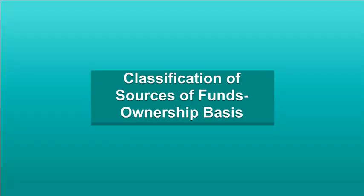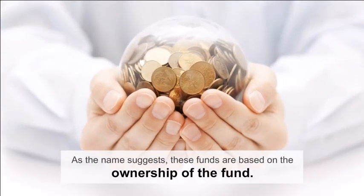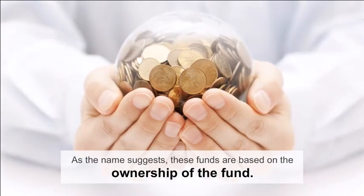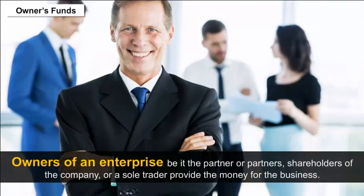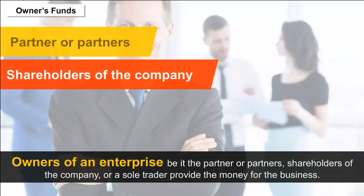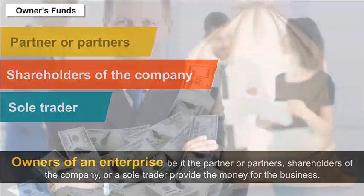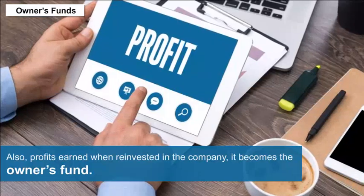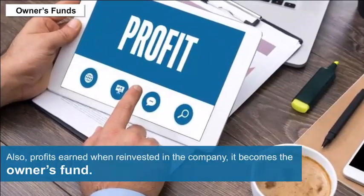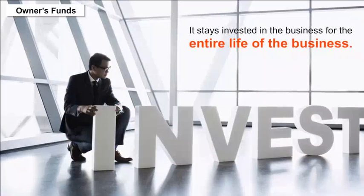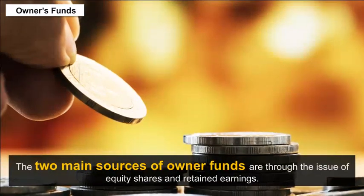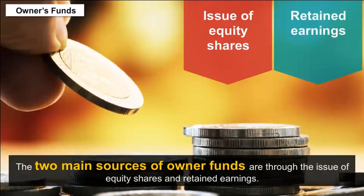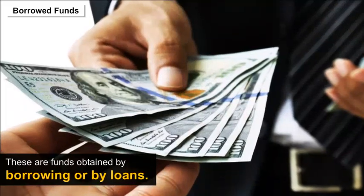Based on ownership, there are two types of funds: owners' funds and borrowed funds. Owners' funds are provided by partners, shareholders, or sole traders. Profits reinvested in the company also become owners' funds. Owners' funds are essentially long-term, staying invested for the entire life of the business, and grant owners the right to control the business. The two main sources of owners' funds are equity shares and retained earnings.